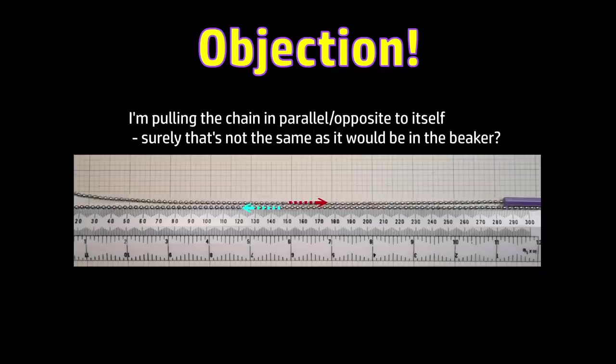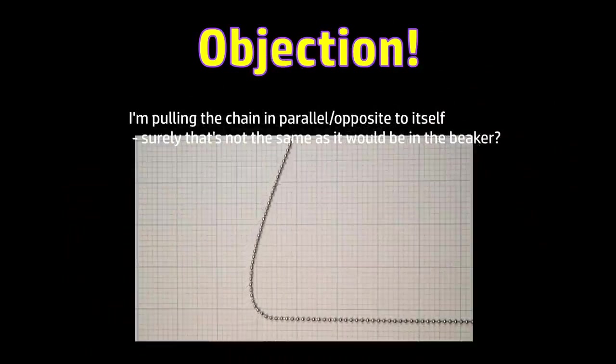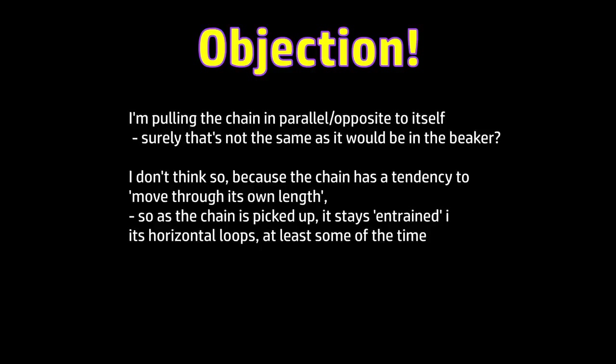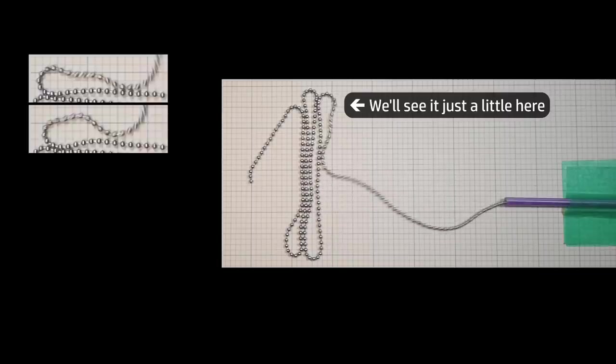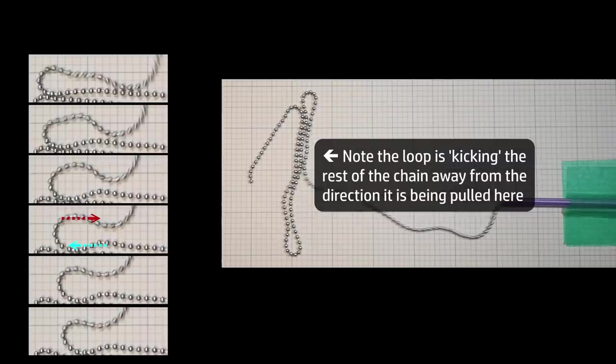Now, I can foresee several objections to this whole idea, so let me try to answer those. Firstly, I'm pulling one end of the chain parallel and opposite to the other. This might not seem the same as when the chain is picked up out of a heap in the beaker. Surely that would be more like pulling at 90 degrees, like this, right? Well, sometimes yes, but more often no. Because as we've already discussed and has long been established, chains have a tendency to move through their own length, that is to stay entrained in their path. So if the chain is in horizontal loops in the beaker, it will have a tendency to stay entrained in those loops as it pays out. The effect is not very noticeable at low speeds because of losses to friction, but when it gets going, it's definitely staying entrained. And so although there is a loop rising, there's also a loop pulling through its own length horizontally below that, at least some of the time.